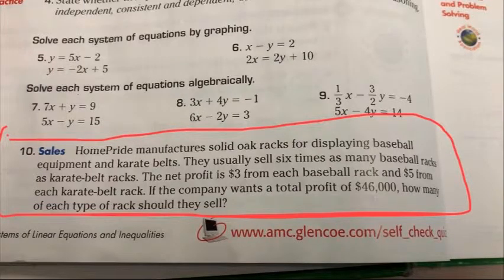Alright, so now for the word problem. I have one right here. I chose this one. And it is HomePride manufactures solid oak racks for displaying baseball equipment and karate belts. They usually sell 6 times as many baseball racks as karate belt racks. The net profit is $3 for each baseball rack and $5 for each karate belt rack. If the company wants a total profit of $46,000, how many of each type of rack should they sell?